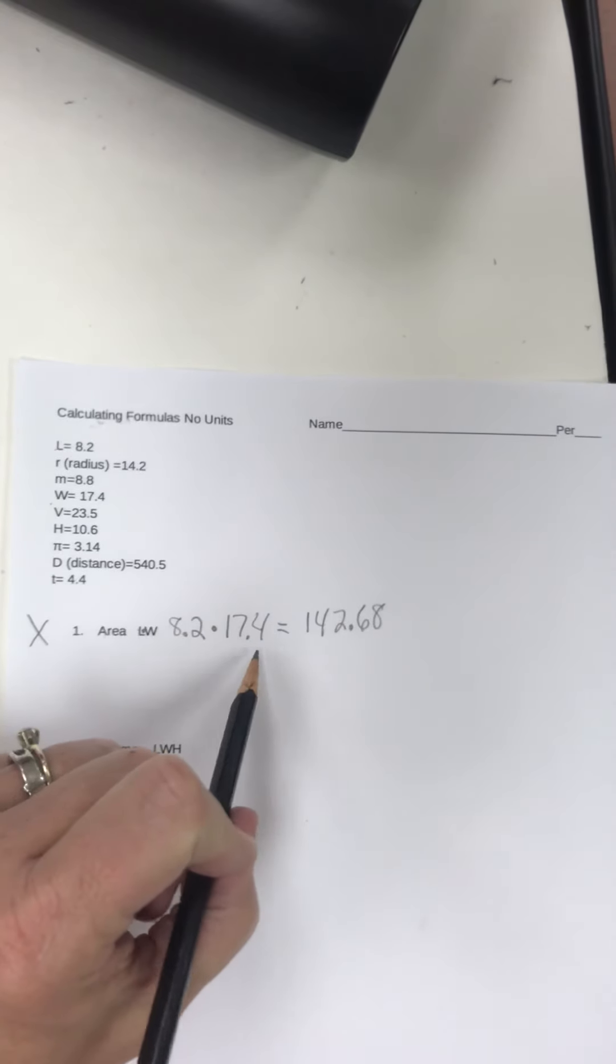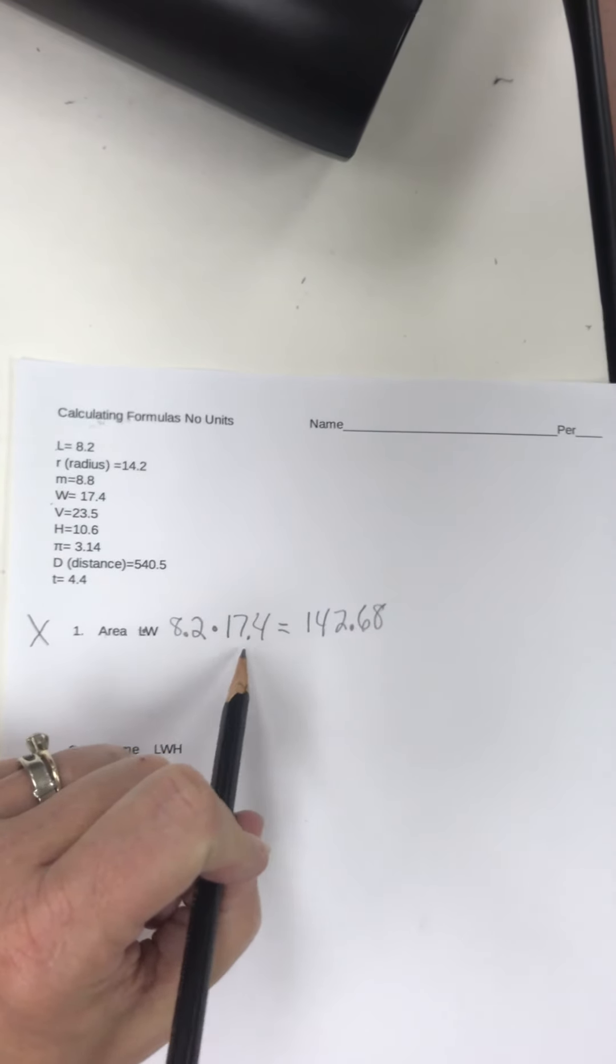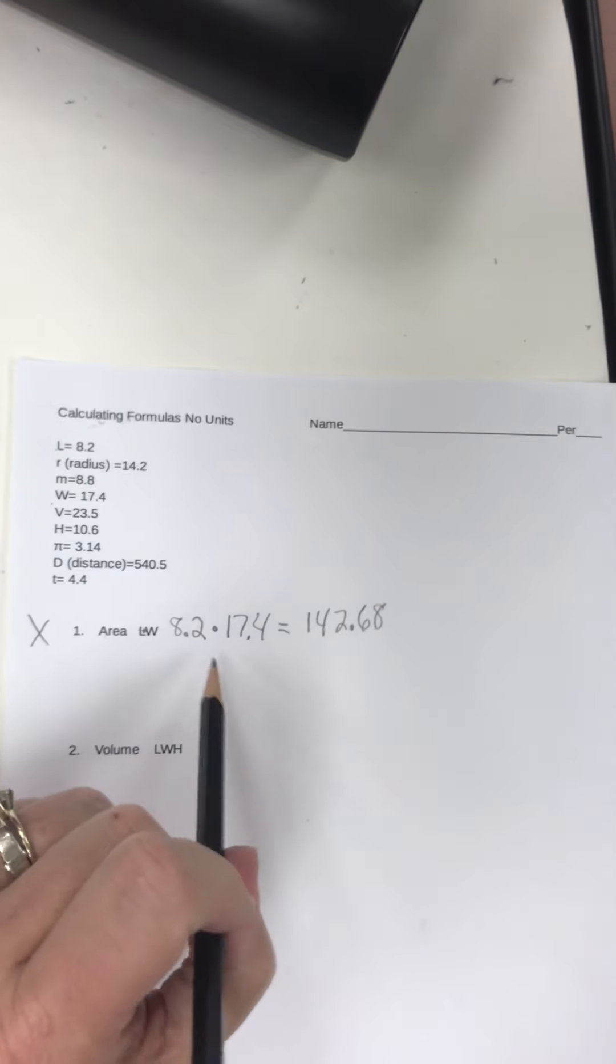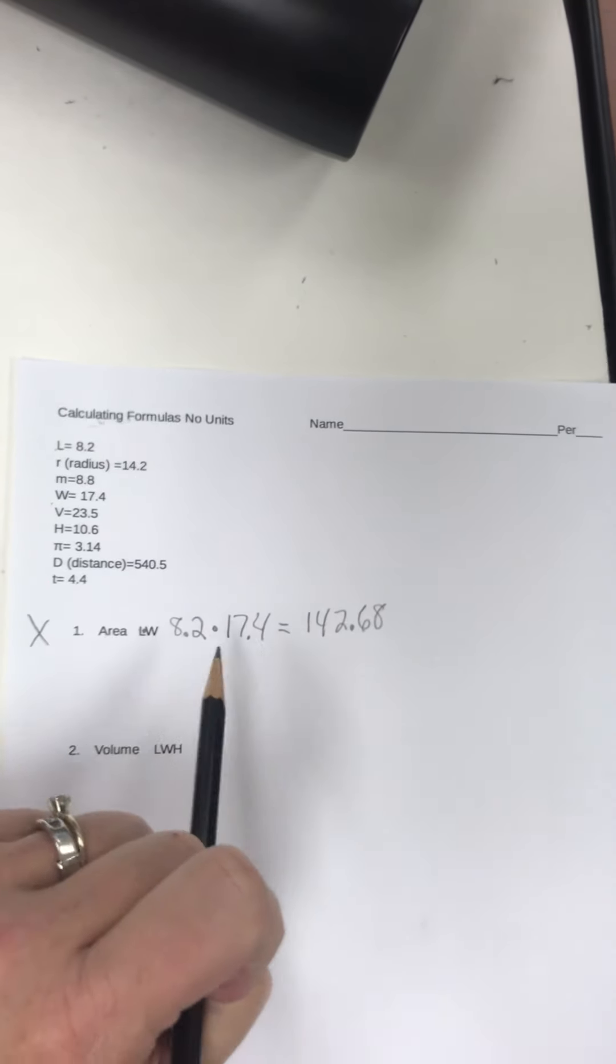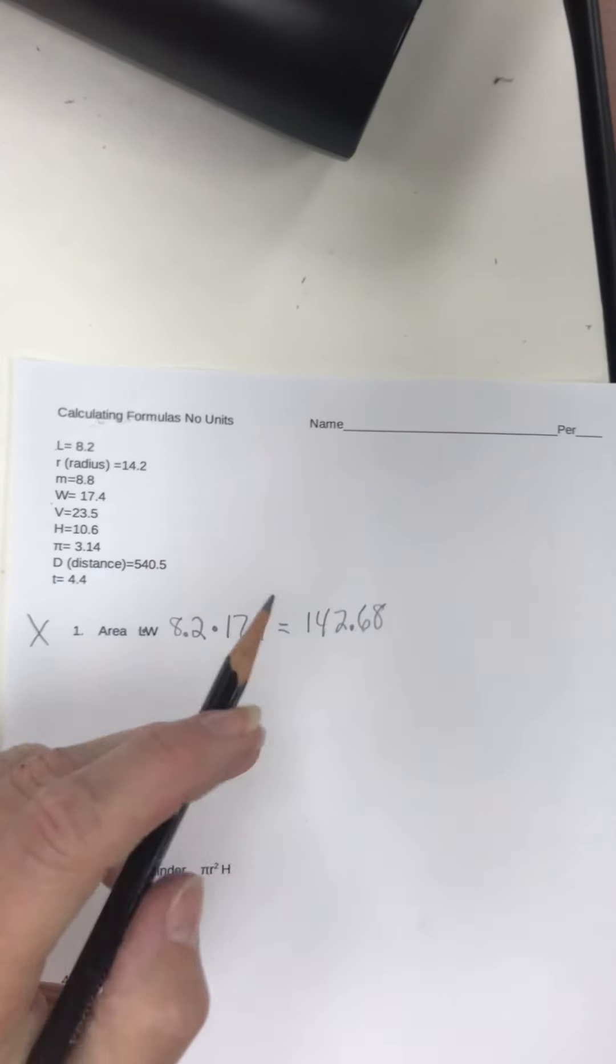Now, I know these aren't measurements, but normally if they were measurements that have a unit on it, and they actually are measurements, I just left the units off. Note, you would actually have to do the sig figs on this one, but we're not going to do the sig figs because we don't know what the units are.